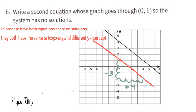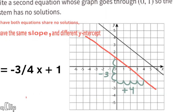Part B: Write a second equation whose graph goes through ordered pair (0, 1) so the system has no solutions. In order to have both equations share no solutions, they both have the same slope and different y-intercept. I drew in this red line because this red line has the same slope but a different y-intercept. The equation for this line would read y equals negative three-fourths x plus 1. This equation has the same slope but a different y-intercept.